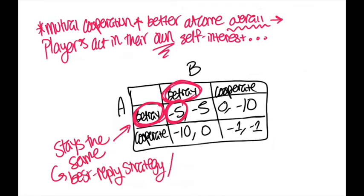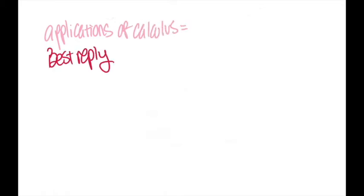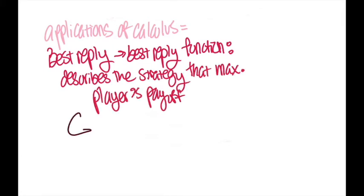Using this best reply strategy or the graphical circle method, we can use it to help us determine what is the Nash Equilibrium in a given scenario. But let's say we want to use more mathematical proofs than logic. This is where the calculus comes in. Remember that we previously defined a player's best reply and their best reply function as something that describes a strategy that maximizes a player's payoff.